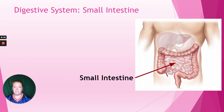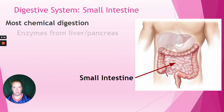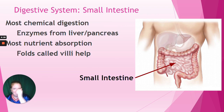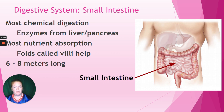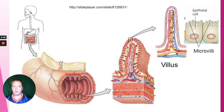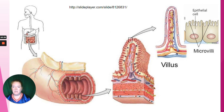The small intestine is where most chemical digestion occurs. It has enzymes sent to it from both the liver and the pancreas, and it's also where most nutrient absorption happens. There are folds in the small intestine called villi — one is called a villus — which increase surface area and allow more absorption to happen, because more cells can absorb nutrients. Your small intestine is not actually small: it's 6 to 8 meters long, or 18 to 24 feet.